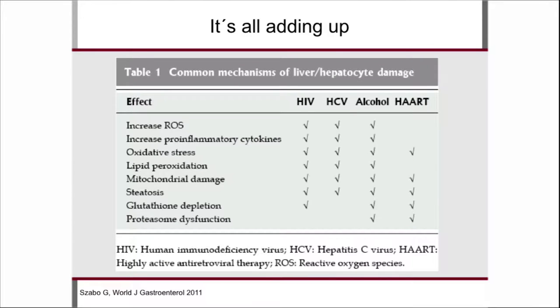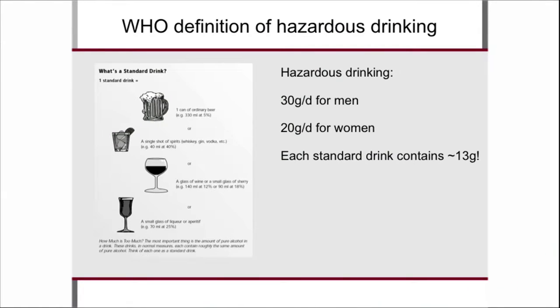This review paper sums up the effects of alcohol intake in this population. The common mechanisms of hepatotoxicity include oxidative stress, lipid peroxidation, steatosis, and mitochondrial toxicity. HIV may impact many of these mechanisms, as may viral hepatitis and antiretroviral treatment. When people also drink, you get an accumulation of different factors impacting the liver. The WHO says drinking more than 30 grams per day of pure alcohol for men or more than 20 grams for women puts you at risk for physical damage from alcohol use.